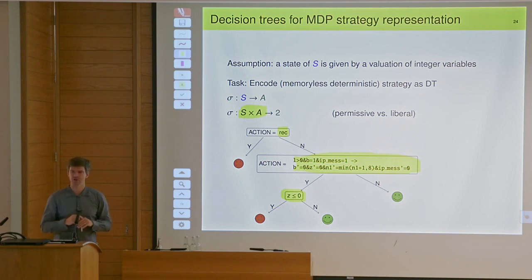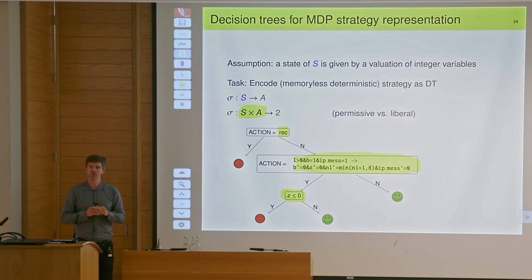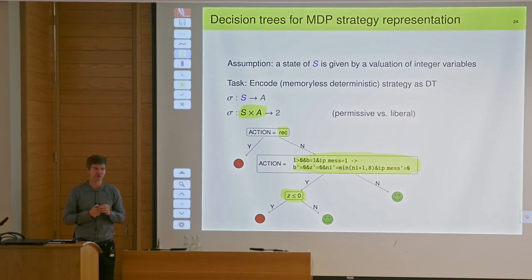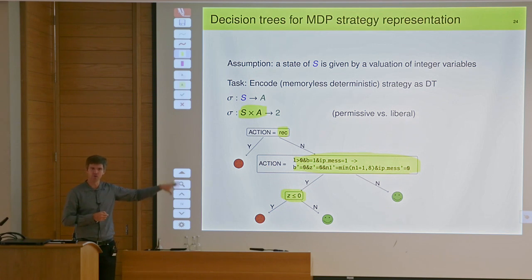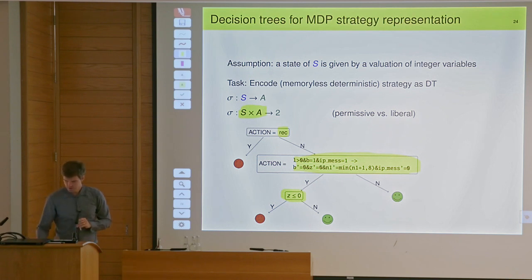So how do we get something like that from a strategy? Maybe those of you more inclined to learning might ask: do I really want to process the strategy computed in this way, or should I directly compute these decision trees? That would be even cleverer. This is harder — it's not solved yet. There are a couple of groups working on how to get strategies reliably in this form. What I can show you at the moment in its complete form is how you process the computed strategy into something that is already readable.